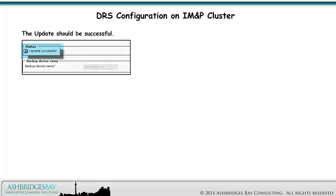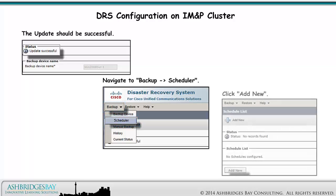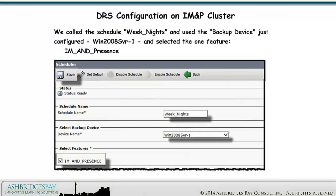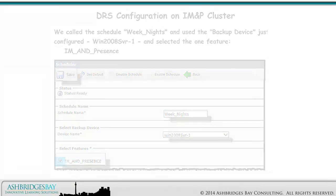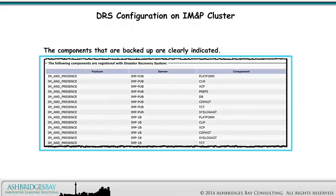The update should be successful. Navigate to Backup > Scheduler. Click Add New. We called the schedule "weeknights" and used the backup device just configured — Windows 2008 Server 1 — and selected the one feature: IM&P. The components that are backed up are clearly indicated.